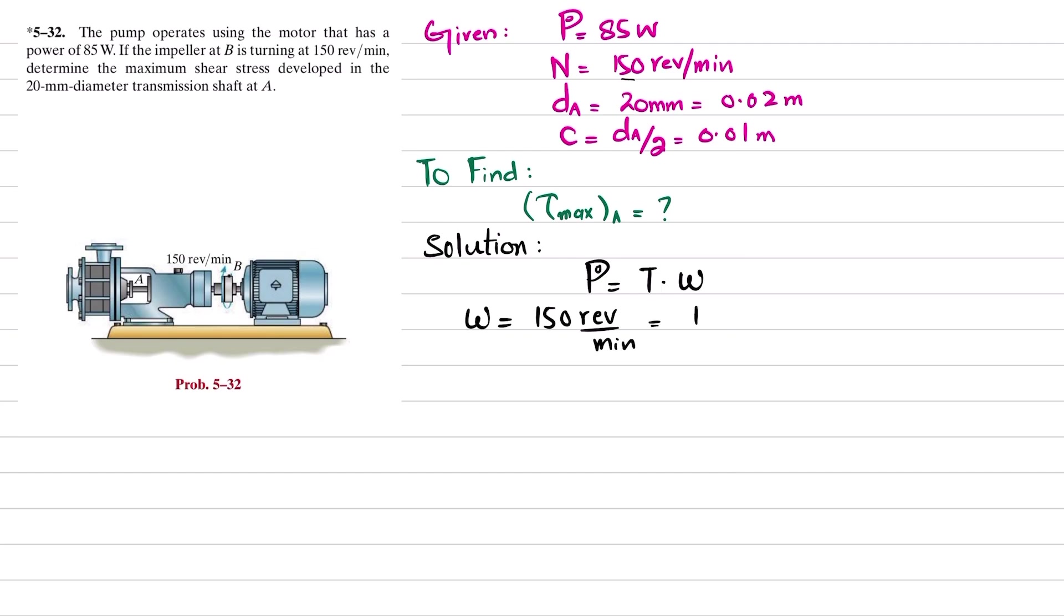150 revolutions per minute: one revolution is 2π radians per revolution. Also, one minute is equal to 60 seconds, so we have revolution units that will cancel out.